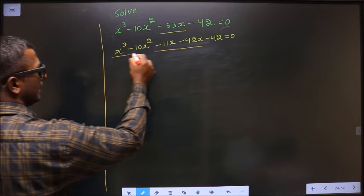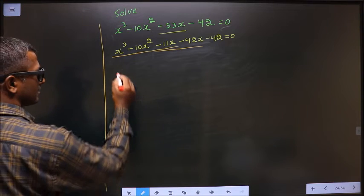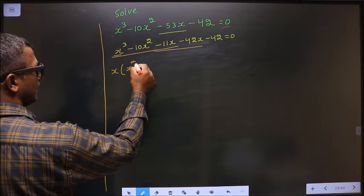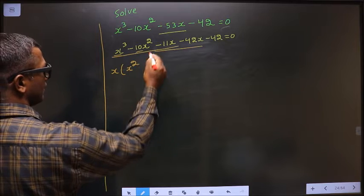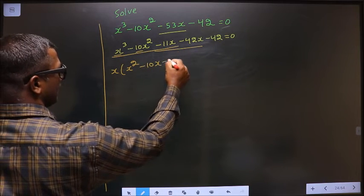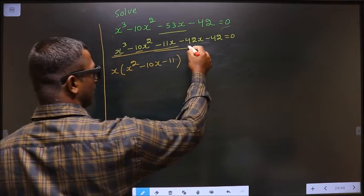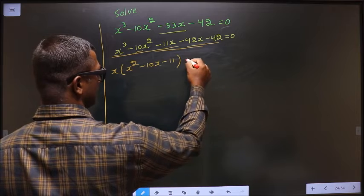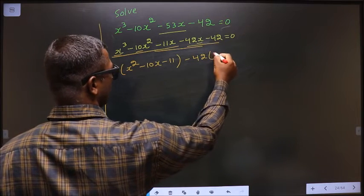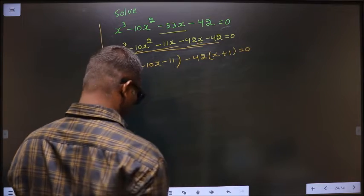What can I take out common from these three terms? It is x. So here I get x squared, here I get minus 10x, here I get minus 11. Same way, what can I take out common from these two is minus 42. Here I get x, here I get plus 1, equal to 0.